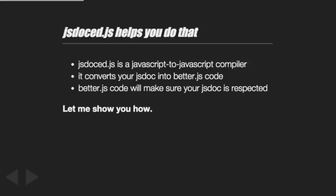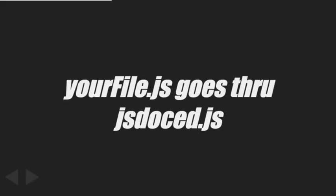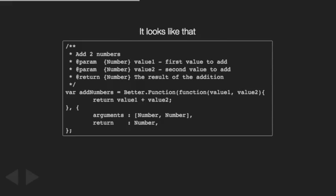All this legwork is done by another library of mine called better.js. JSDoc produces code automatically - you take your file.js and compile it with the compiler, which is jsdoc.js. This compiler produces a .better.js file as a result.